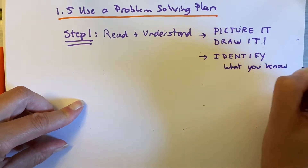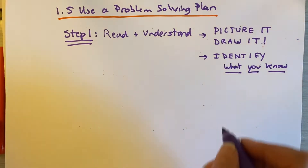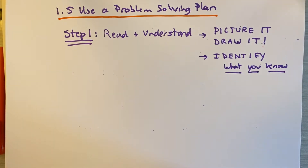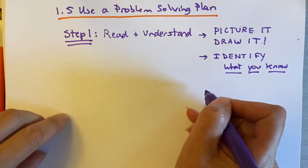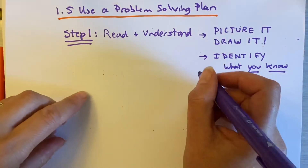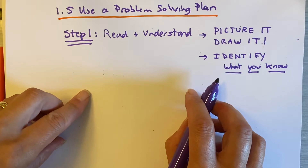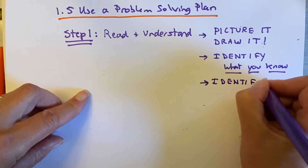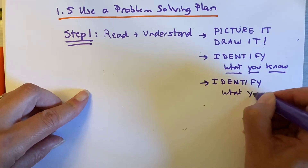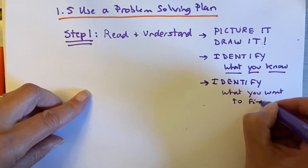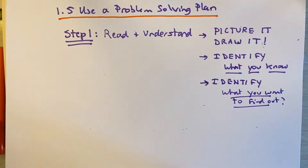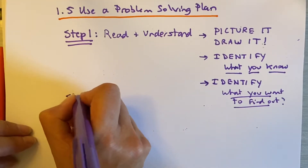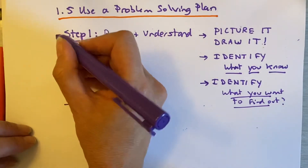Identify what you know — what are the knowns, what things have you been given? The book is not going to try to trick you. In real life, problems are not solved yet; you are the first one solving it. But in this book there actually is an answer, and that's reassuring — it means they have given you what you need to solve the problem. So identify what you know. Second, identify what you want to find out — in other words, what you don't know. What the book wants you to find out is what they're asking.